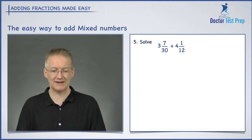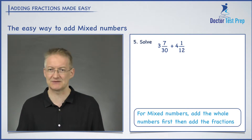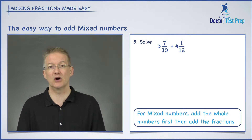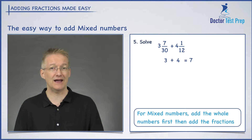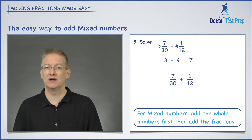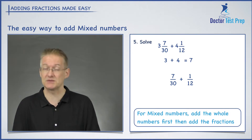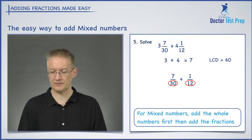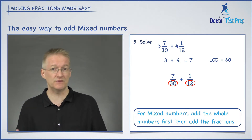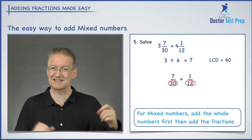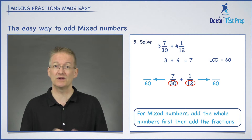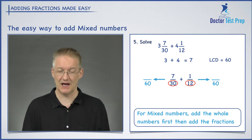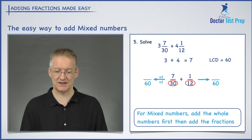We're going to use this now to answer the mixed question in number 5. Whenever we're adding mixed numbers together, there's a nice method. The first step is to add the whole numbers first: 3 plus 4 gives me 7. Now I add the fractions: 7 thirtieths plus 1 twelfth. In the previous question, we showed that the lowest common denominator between 30 and 12 was 60. Looking at 7 over 30, what did I need to do to 30 to get 60? I multiplied by 2. So I'm multiplying the top by 2 as well, giving me 14 over 60.